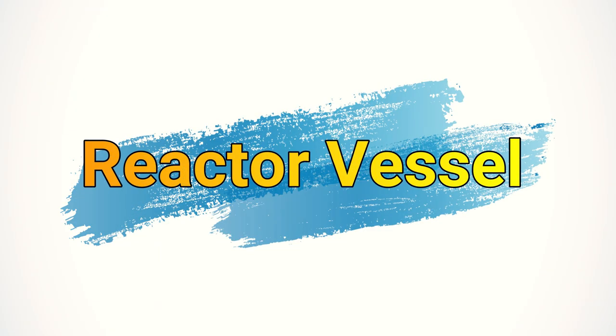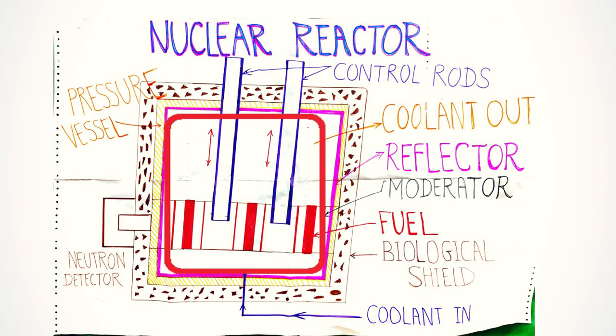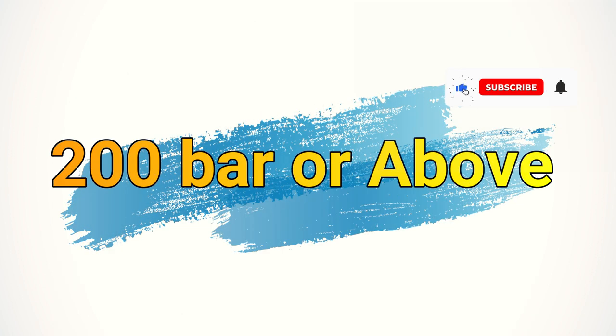The next one is reactor vessel. The reactor vessel encloses the reactor core, reflector, and shield. It also provides the entrance and exit passage for directing the flow of coolant. The reactor vessel has to withstand pressure as high as 200 bar or above.